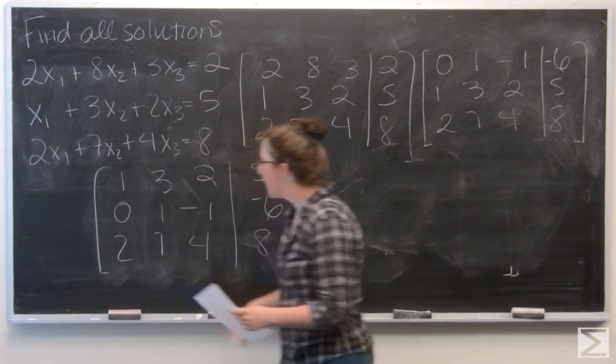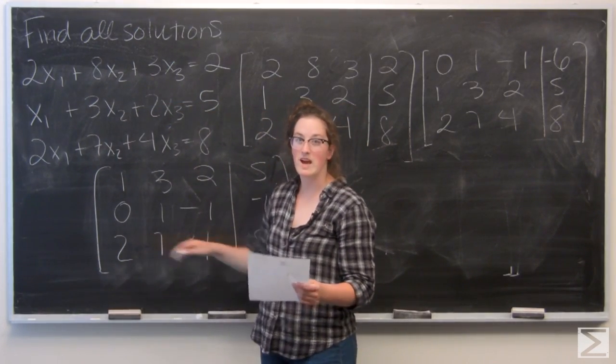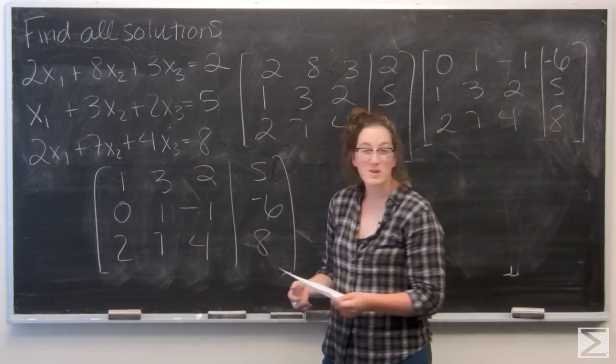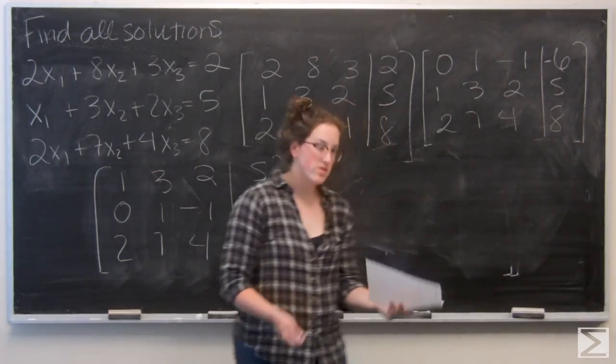And from here, I need to clear this 2 out of the bottom so I only have 1, 1 in this column. And to do so, I am going to subtract 2 times the first row from the third.